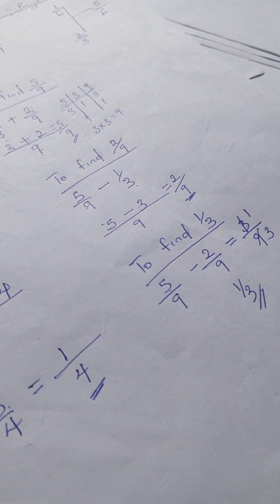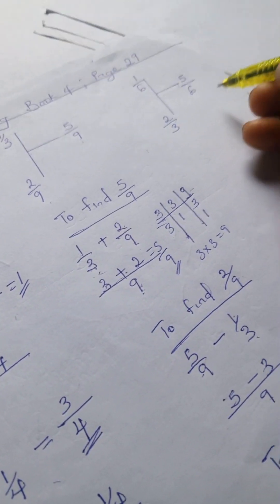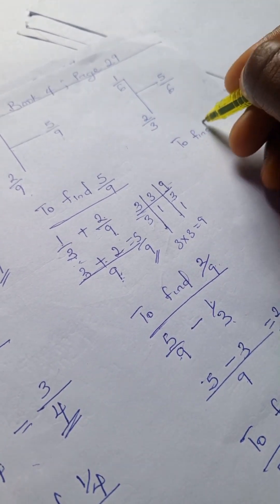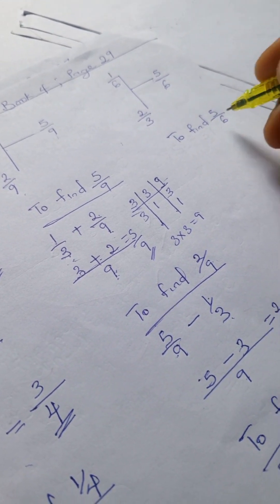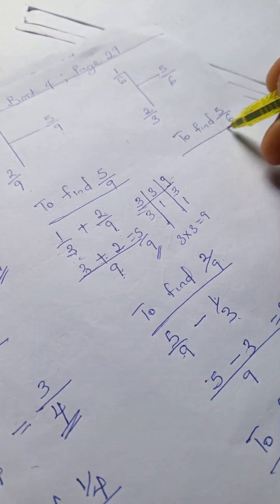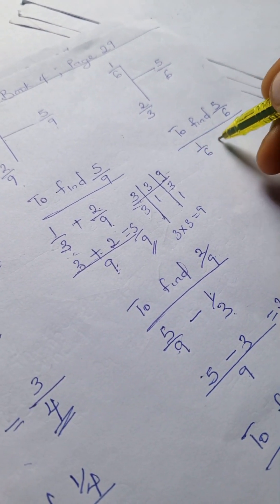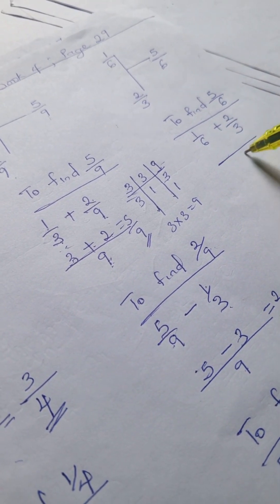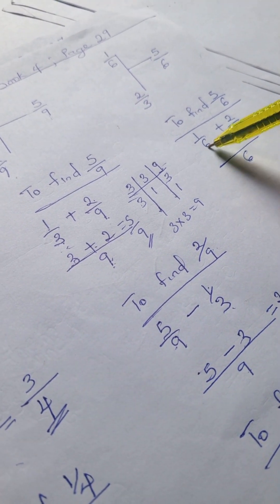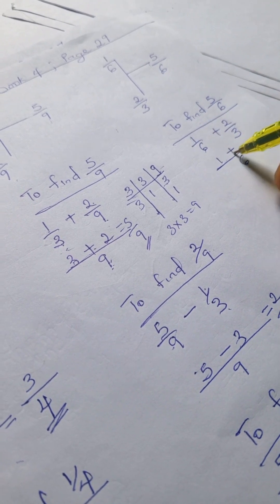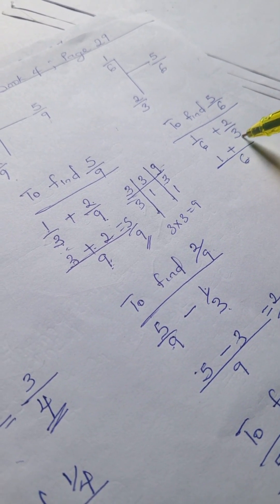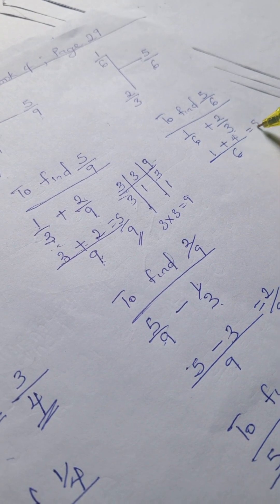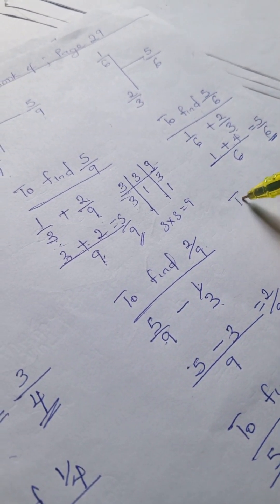Let's solve the third example for more emphasis. To find 5/6, we have 1/6 plus 2/3. The LCM for this is 6. Six divided by 6 is 1, times 1 is 1; plus 6 divided by 3 is 2, times 2 is 4. So 1 plus 4 is 5, all over 6.